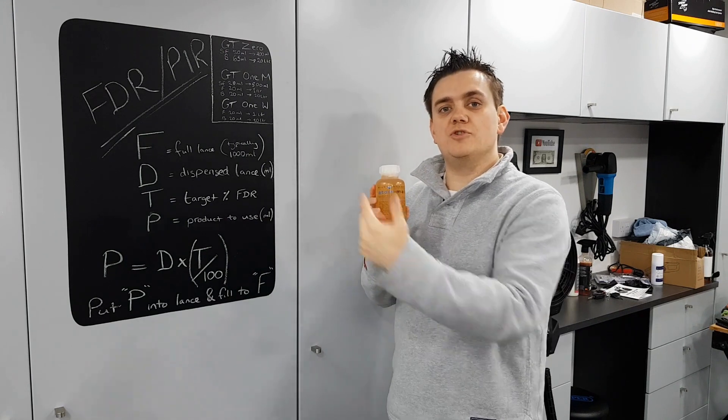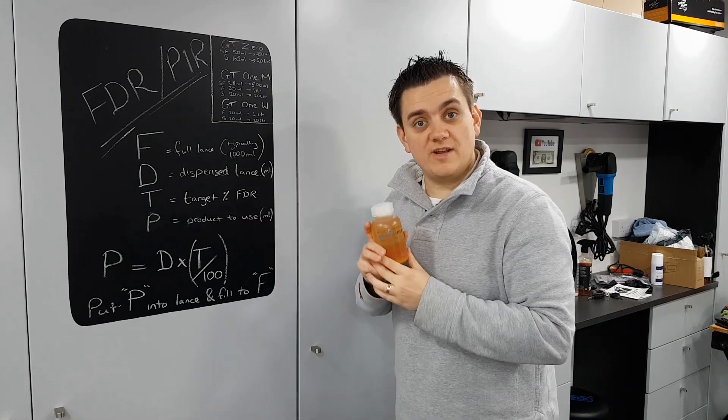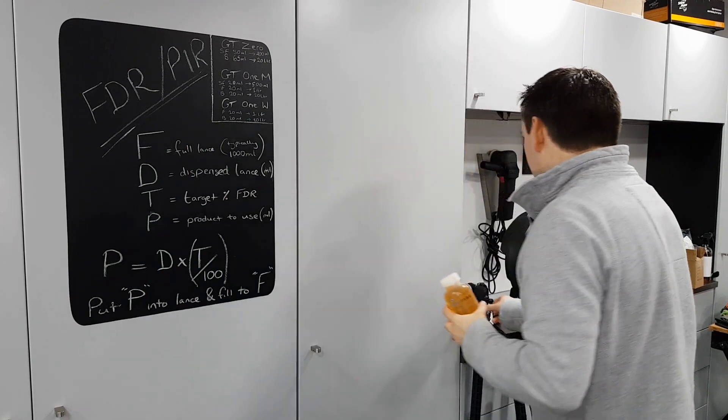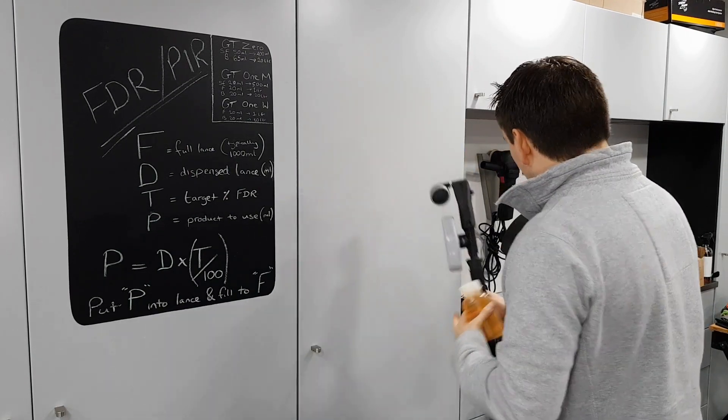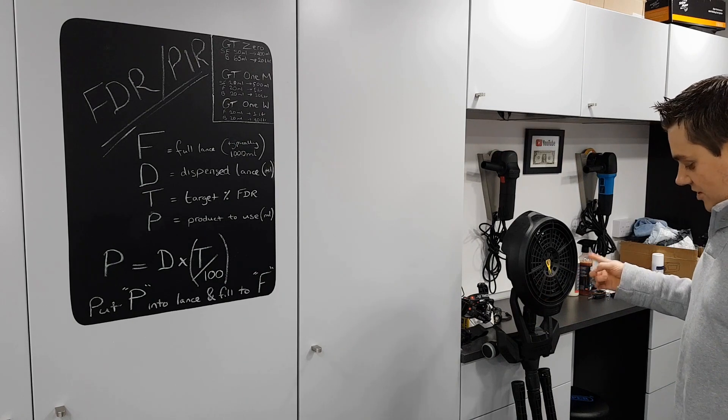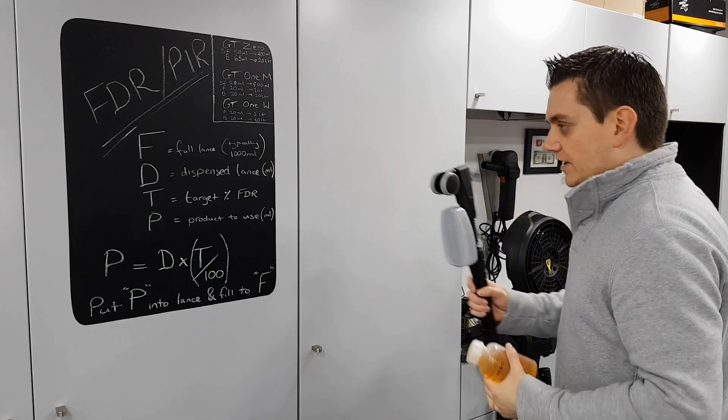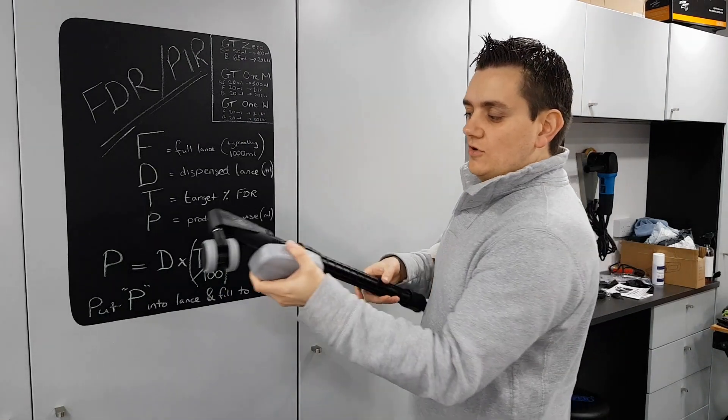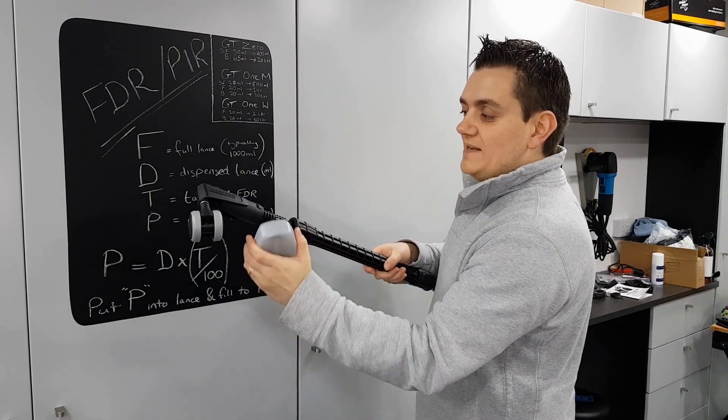What you're going to need to do is work out how much of this goes into your snow foam bottle to produce that final panel impact ratio. As I said, mine has come about because I'm doing an undercarriage clean using the Karcher undercarriage cleaner. There's another video on this.